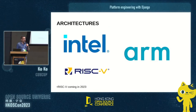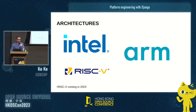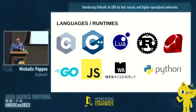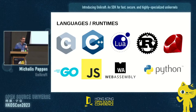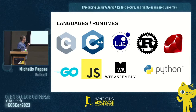We support different architectures: Intel, ARM, and RISC-V is on the way — currently under code review and on the roadmap for this year. Unikraft is written in C, and you can also write libraries in C++. We also support runtimes, which means you can take your existing application written in Python, Ruby, Go, or JavaScript and run it on top of Unikraft without modification.